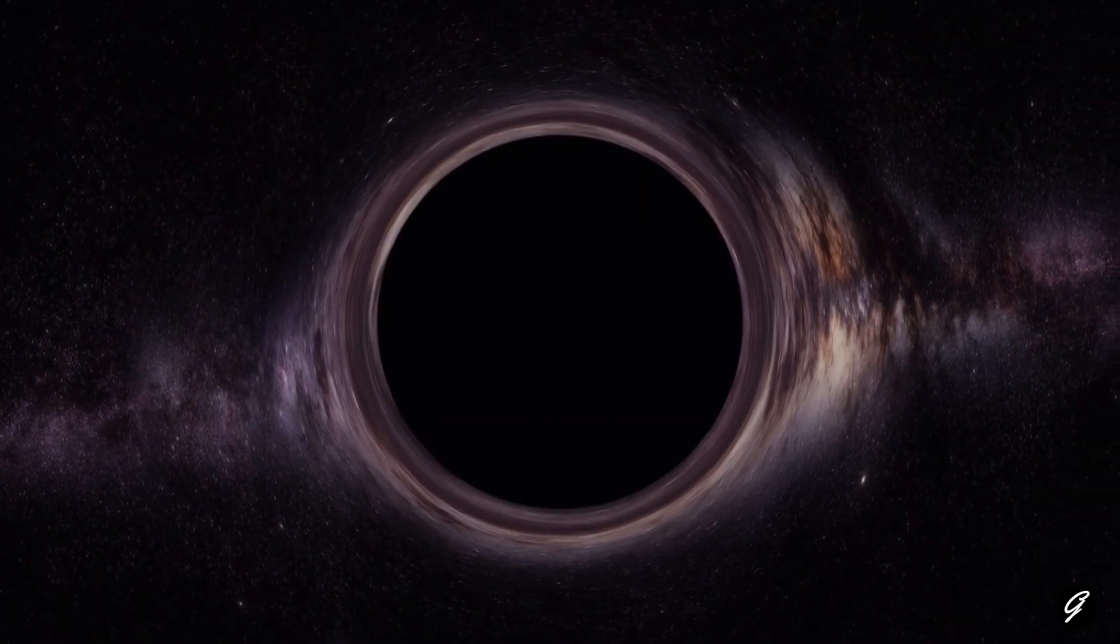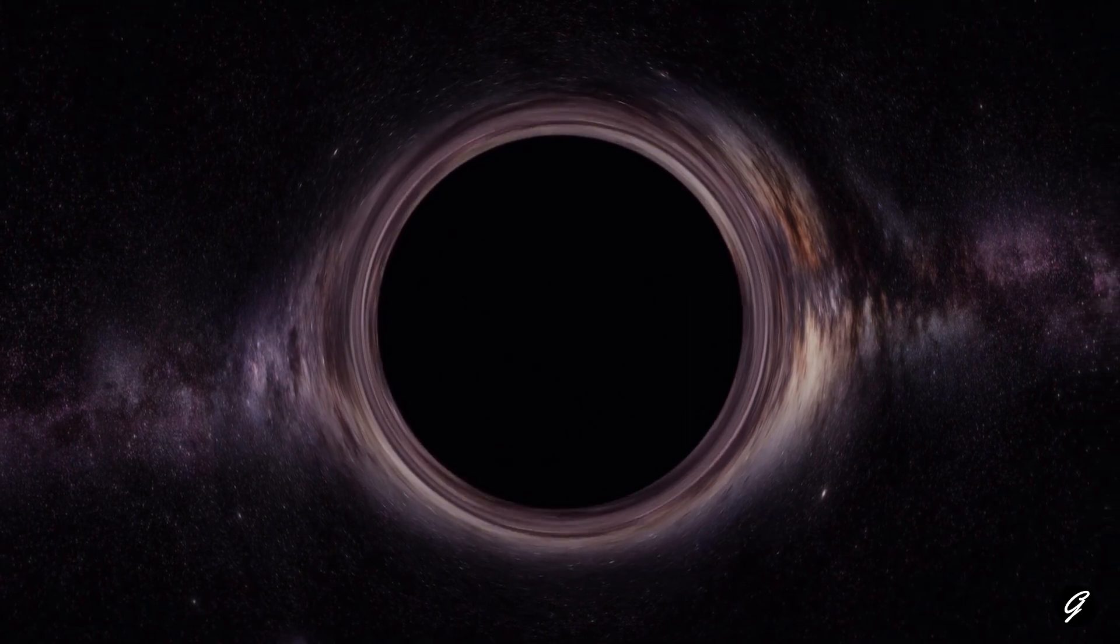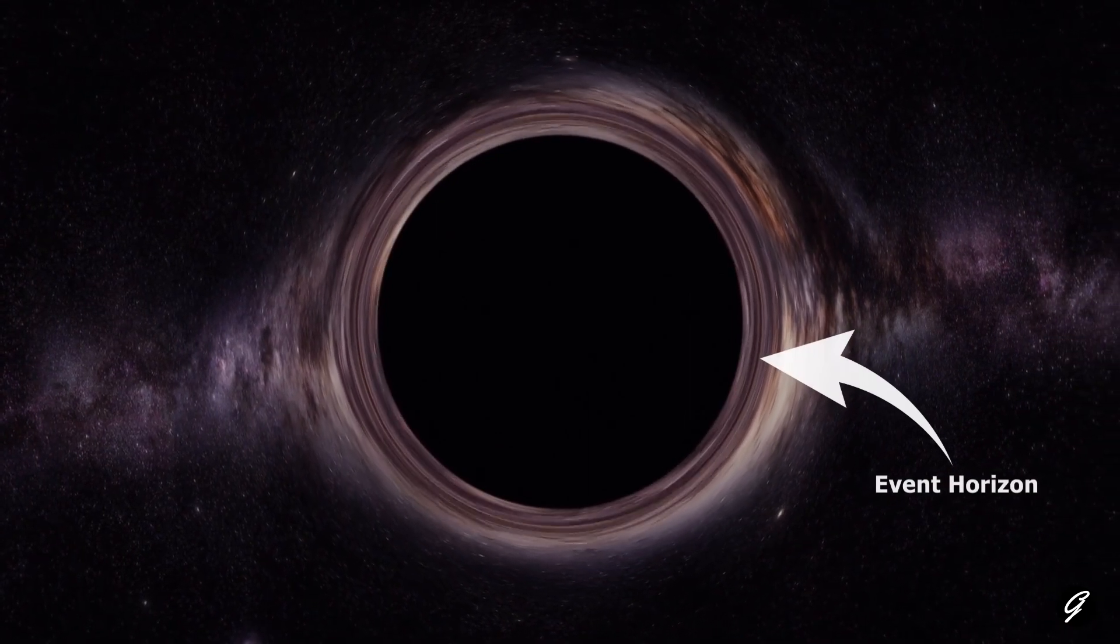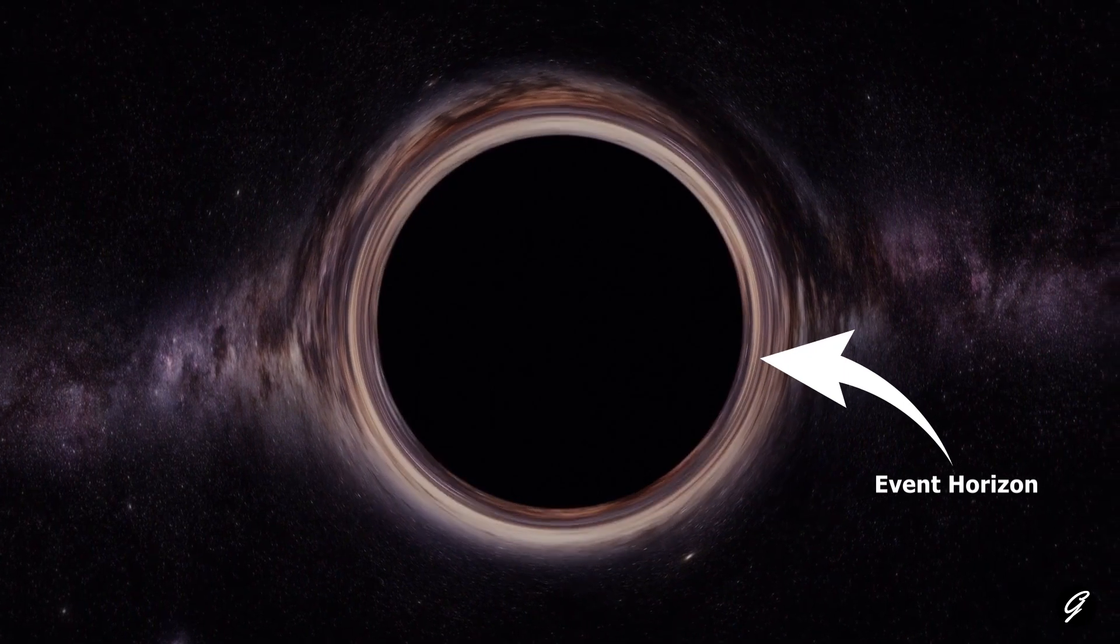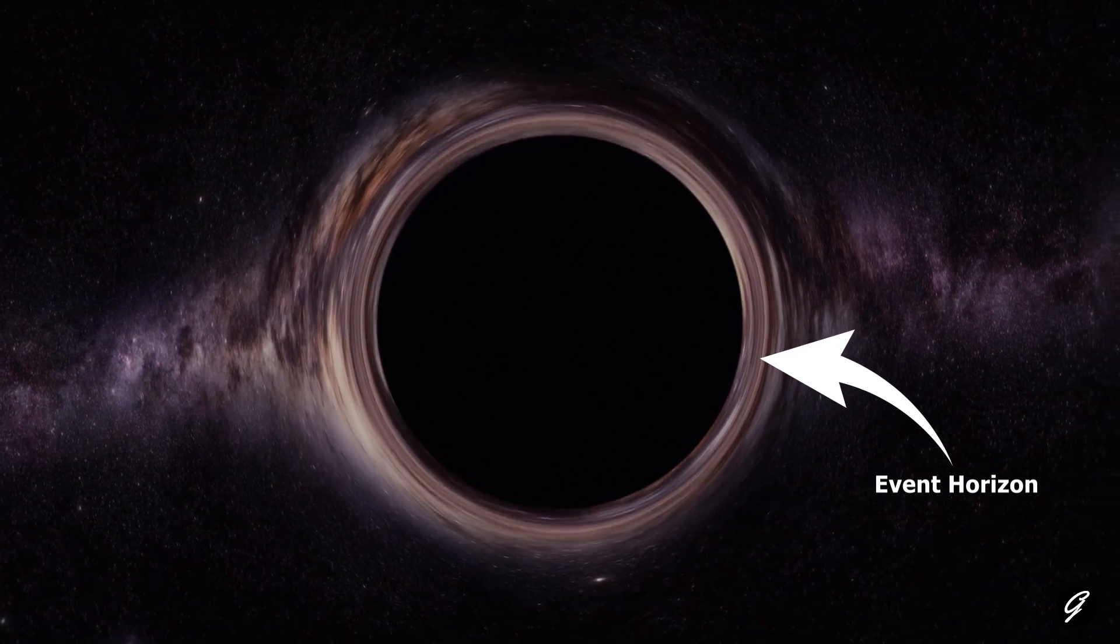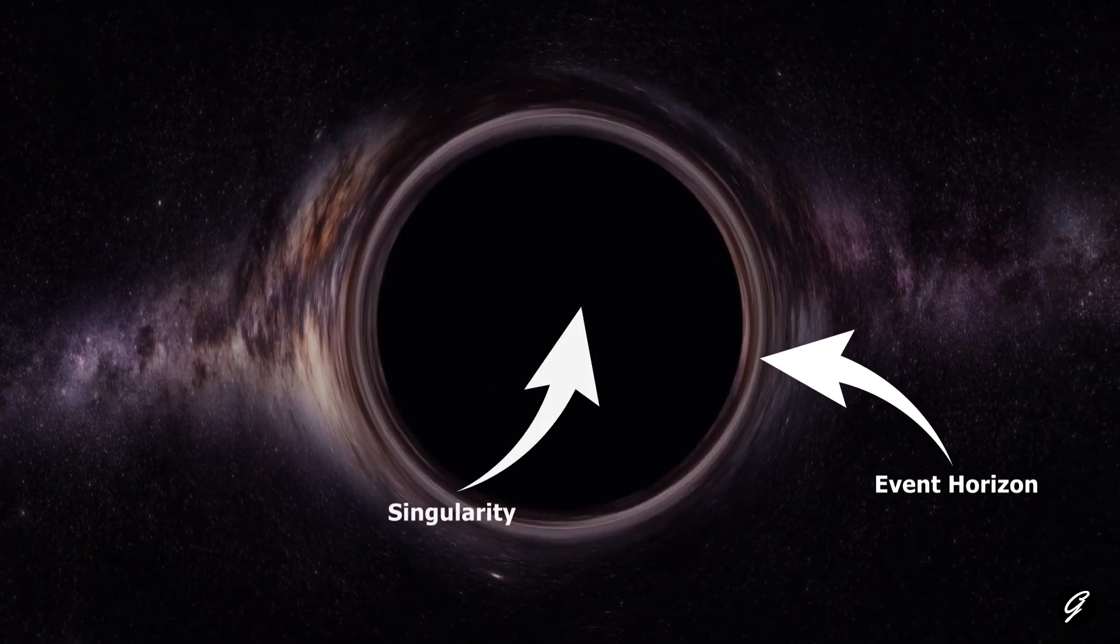This point of no return is known as the event horizon, and it marks the boundary of the black hole. Inside the event horizon, the black hole's gravity is so strong that it pulls everything towards its center, which is called the singularity.